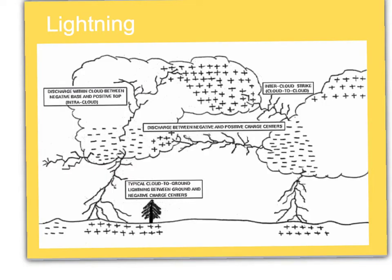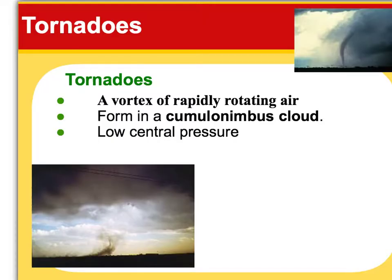Fun fact: lightning is caused by charges in the clouds produced from rain and hail and all those things flying around in there. Opposites attract — once you get opposite charges, you get lightning.